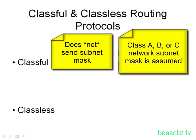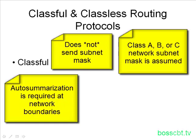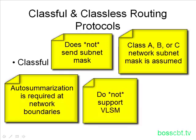That means classful routing protocols have to use auto-summarization at the different network boundaries because they are working on the assumption of classful subnet masks. They don't support variable-length subnet masks because they don't send that information along. In other words, they play by the rules — if they see a particular subnet number, they immediately classify it into an A, B, or C network number and use that associated subnet mask.